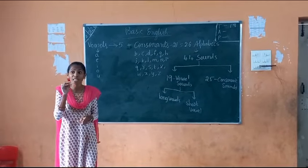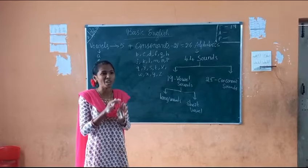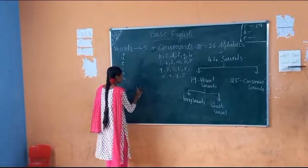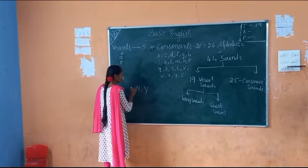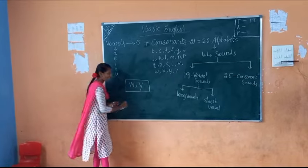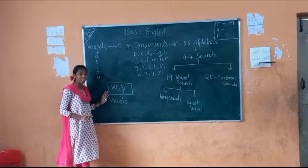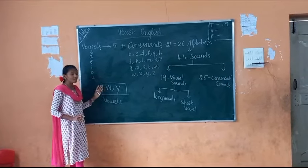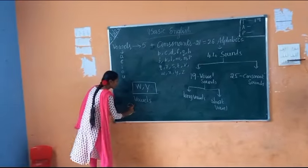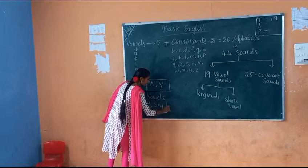Sometimes those who are reading very well, sometimes they can do naughty things. W and Y — W and Y are going to act as vowels. Sometimes they are going to act as vowels. So W and Y means they give vowel sounds. For example: cry, shine, sky.